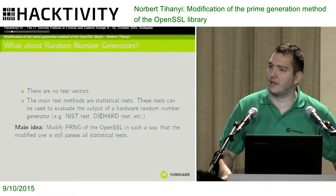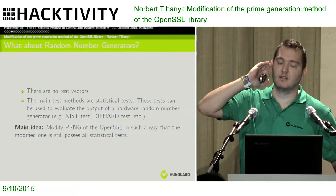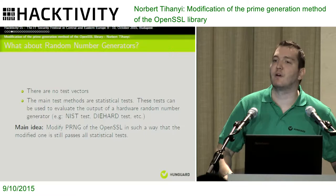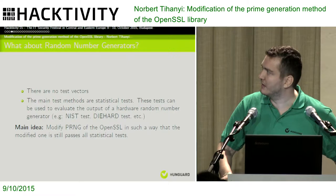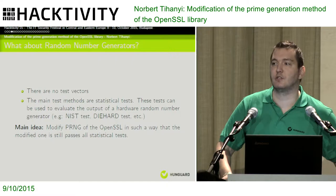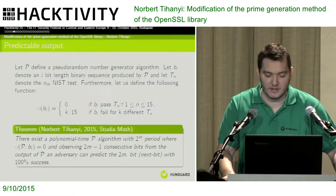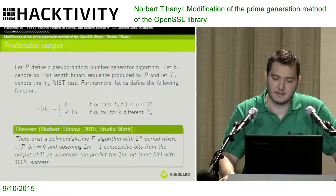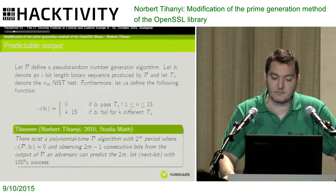The main idea is how to modify a pseudo-random number generator — for example in an OpenSSL library — in such a way that the modified output still passes all statistical tests. If I'm modifying the random number generator, it should pass all statistical tests; if not, it's cryptographically not secure. We tried to make some mathematical background relating to this topic and implement it in practice. There is a term describing how to use mathematics relating to number theory to hide backdoors in a pseudo-random number generator.